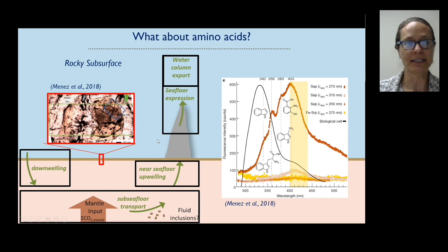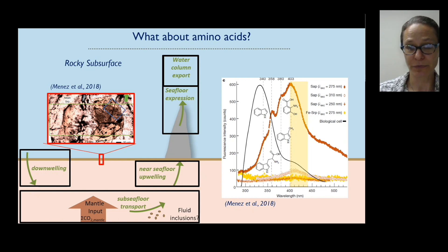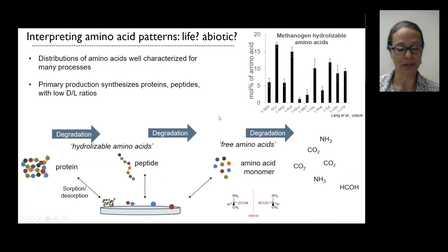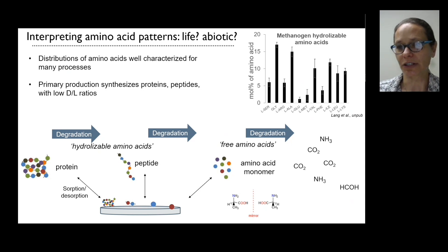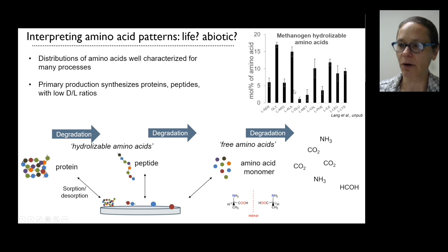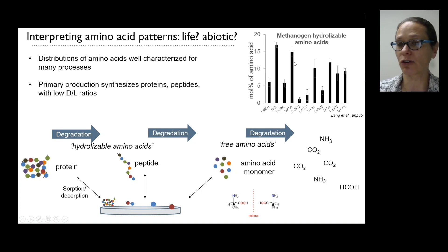The other thing we looked at in these liner fluids was amino acids. There's a great paper by Benedicta Menez looking at cores nearby from an earlier drilling that found amino acids in the drill core itself. To situate the amino acid data: amino acids produced by living organisms have characteristic signatures in terms of what types and ratios are synthesized. This distribution from a methanogen grown in culture is a typical distribution — organisms tend to produce more glycine and alanine than other amino acids, about 15 percent of total amino acids.